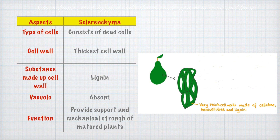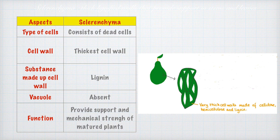Now we move to the last type of ground tissue: sclerenchyma. Unlike parenchyma and colenchyma, sclerenchyma consists of dead cells. The cell wall is the thickest among the three, and the substance that makes it up is lignin — it has a lignified cell wall. The vacuole is mostly absent because these are dead cells. The function of sclerenchyma tissue is to provide support and mechanical strength to mature plants.